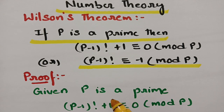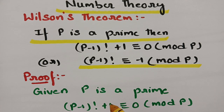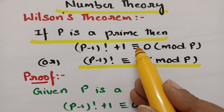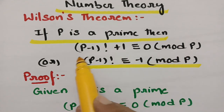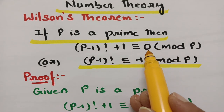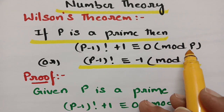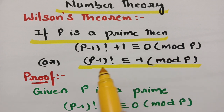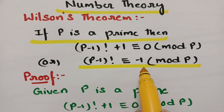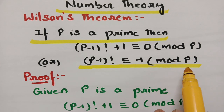In today's topic — Wilson's theorem — the statement states that if p is a prime, then (p−1)! + 1 is congruent to 0 mod p, or equivalently, (p−1)! is congruent to −1 mod p.